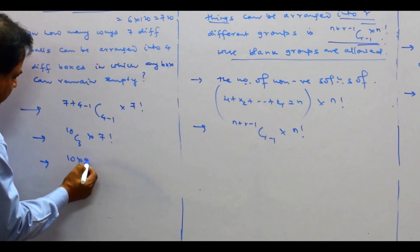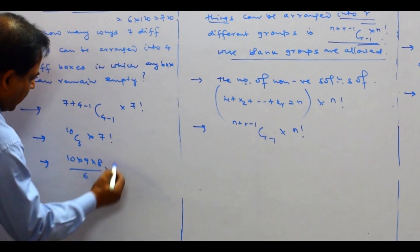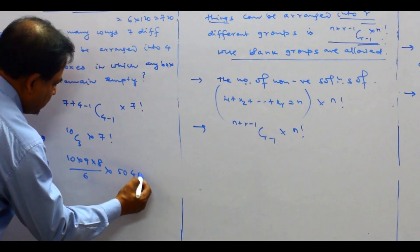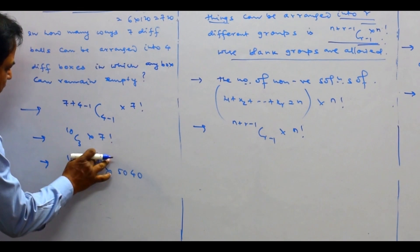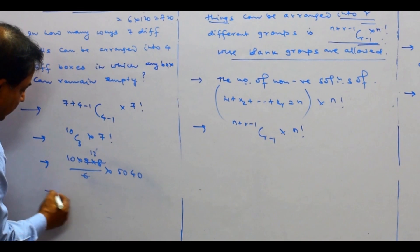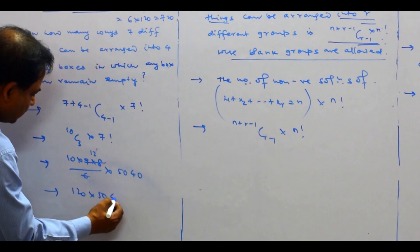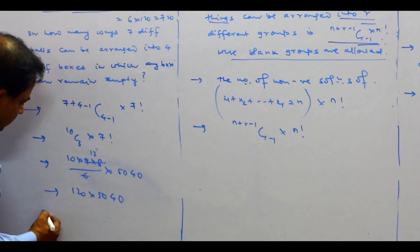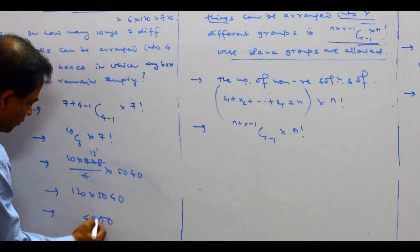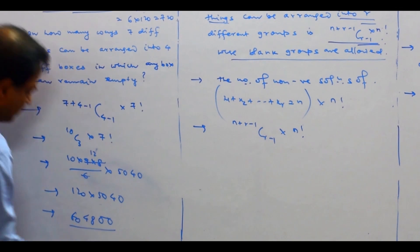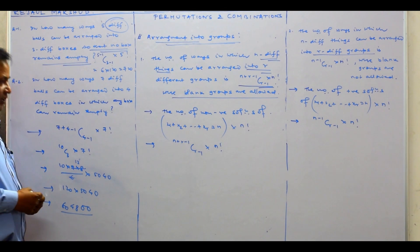10C3 = (10×9×8)/6 = 120, and 7! = 5040. So the answer is 120 × 5040 = 604,800.